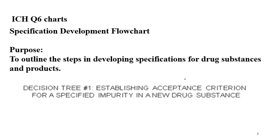Coming to the ICH Q6 decision tree flow charts — these are the specification development flow charts. The purpose of these flow charts is to outline the steps in the development of specifications for drug substances and drug products. This guideline gives you flow charts through which you can understand thoroughly how specifications are established and how ranges are finalized. Decision tree 1 gives you the process for establishing acceptance criteria for a specified impurity in a new drug substance.